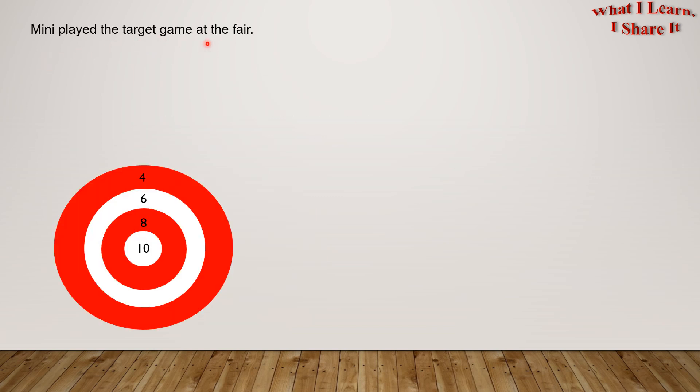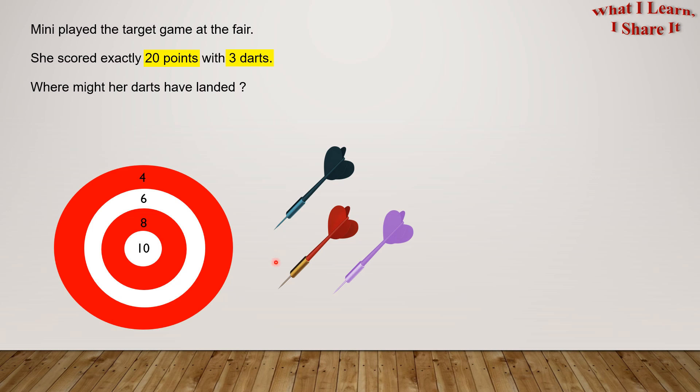Minnie played the target game at the fair. So here is her target. She scored exactly 20 points with three darts. And here are her three darts. Where might her darts have landed?